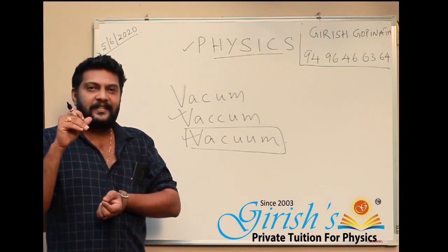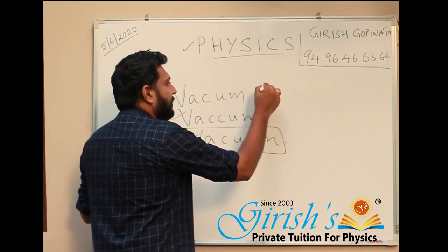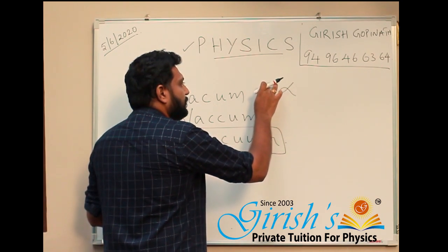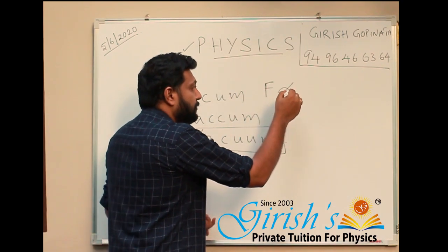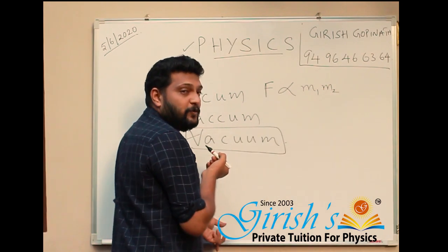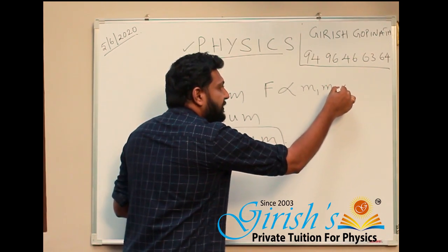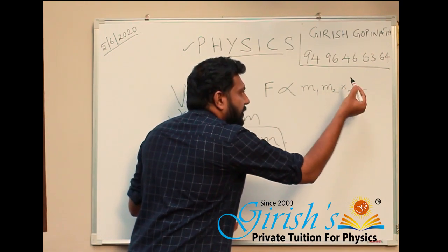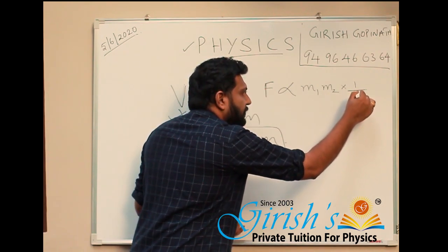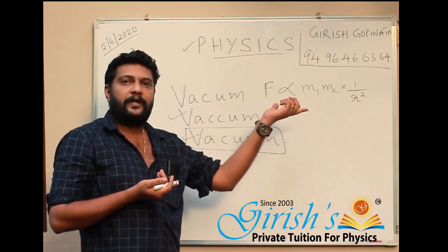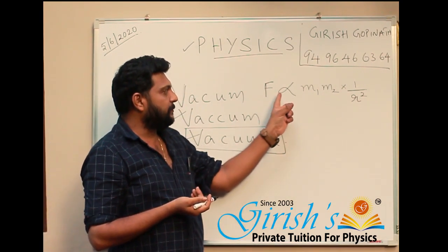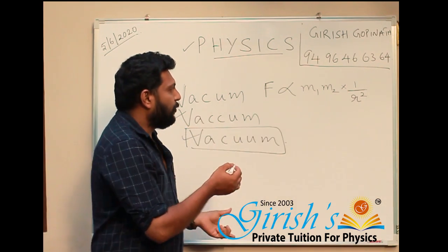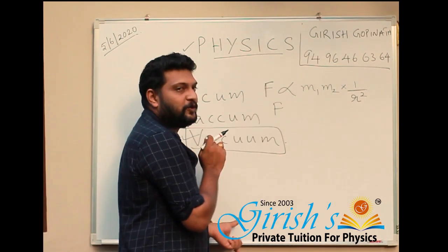Every particle attracts every other particle with a force. Force is denoted by the letter F. F is directly proportional to the product of their masses M1 and M2, and inversely proportional to the square of the distance.